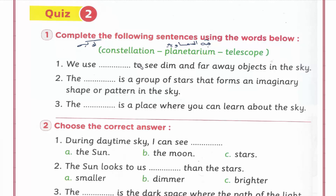Number one: We use a telescope to see dim and far away objects in the sky. بنستخدم telescope عشان نشوف الحاجات الغامقة والبعيدة في الsky. Number two: A constellation is a group of stars that forms an imaginary shape or pattern in the sky.